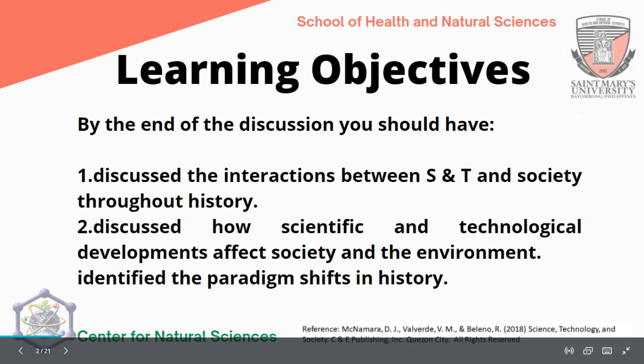By the end of the discussion, you should have: first, discussed the interactions between science and technology and society throughout history; second, discussed how scientific and technological developments affect society and the environment; and lastly, identified the paradigm shifts in history.